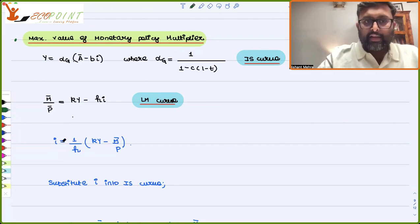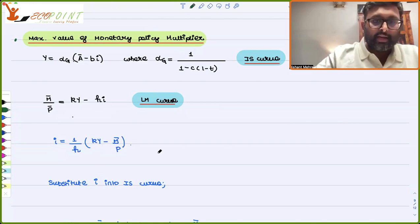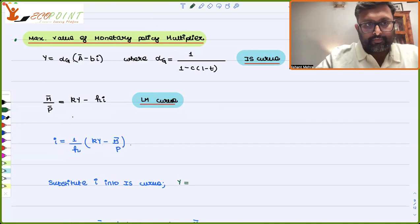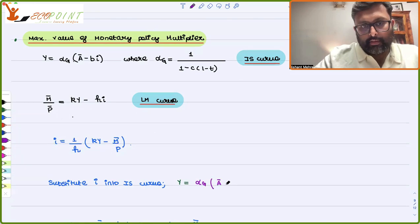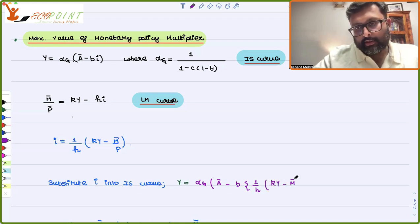From the LM curve, I can write I as 1 upon H times KY minus M bar by P bar. And I can substitute it back into the IS curve. And I will be getting this expression.